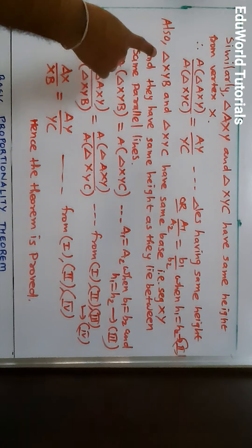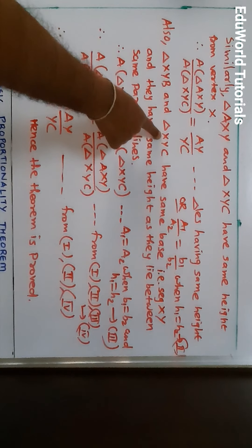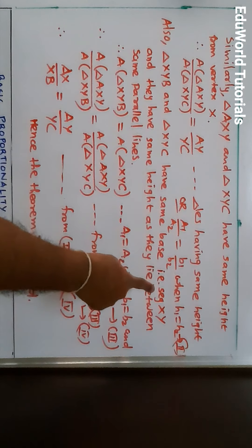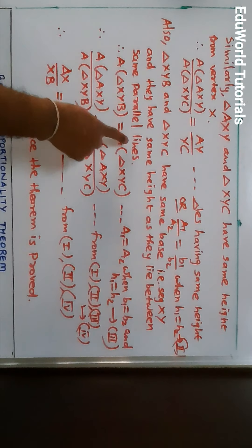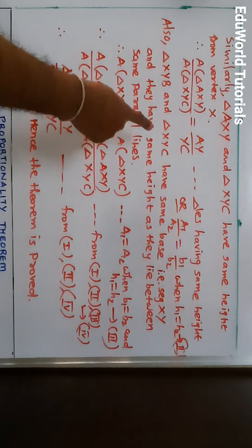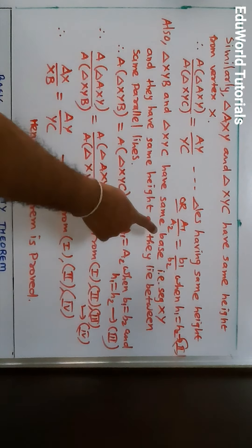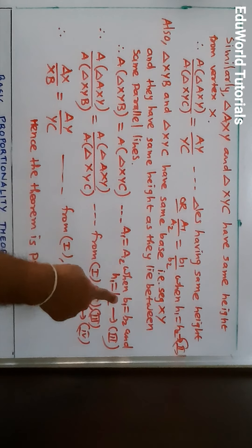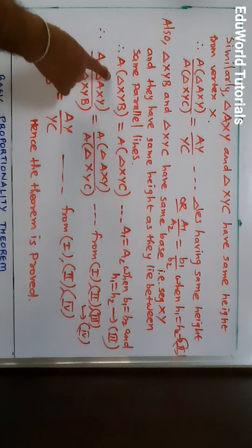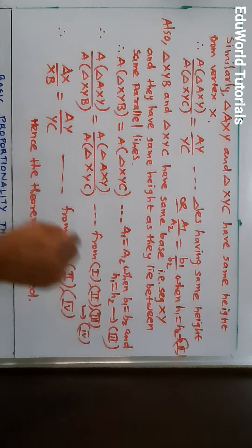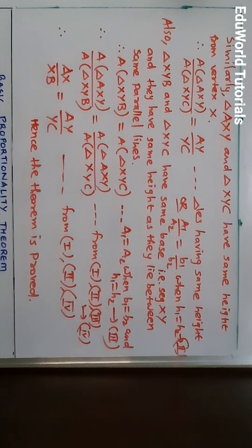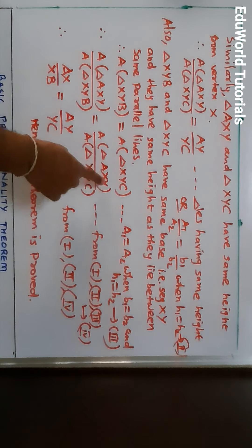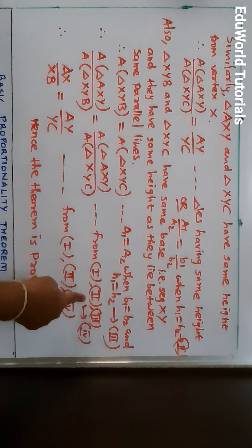Triangle XYB and triangle XYC — which form the denominators of Result 1 and Result 2 — have the same base, that is seg XY, and they have the same height as they lie between the same parallel lines. When two triangles have the same base and same height, we use the property that A1 = A2 when B1 = B2 and H1 = H2. So, area of triangle XYB is equal to area of triangle XYC. This is Result 3. From Results 1, 2, and 3, the left-hand sides being equal gives us: area of triangle AXY upon area of triangle XYB equals area of triangle AXY upon area of triangle XYC. This is Result 4.